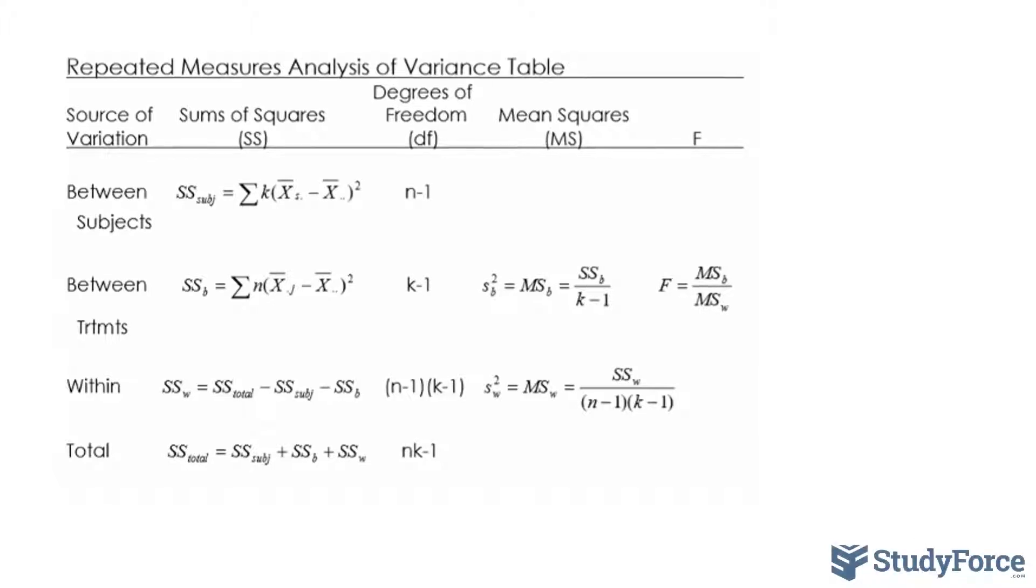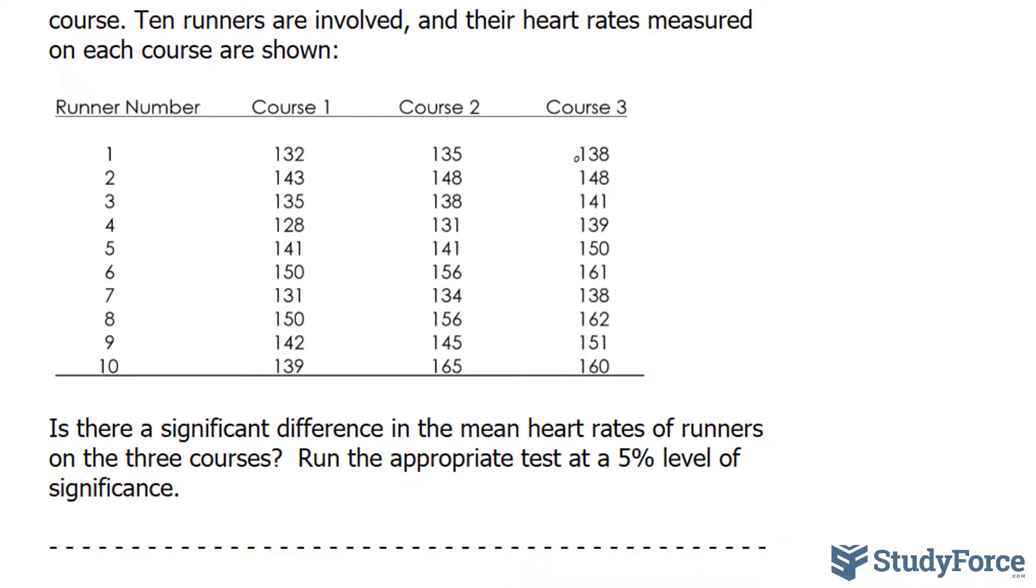That being said, let's begin by writing out the hypothesis, the null and alternative hypothesis. This is the same thing as before with the regular one-way ANOVA. So, the null hypothesis will be that the means will not change from one course to the other. So, I'll write down the mean of course 1 is equal to the mean of course 2 and that of course 3. And the alternative is that there will be a difference in these means. So, I'll write down at least 2 means differ.